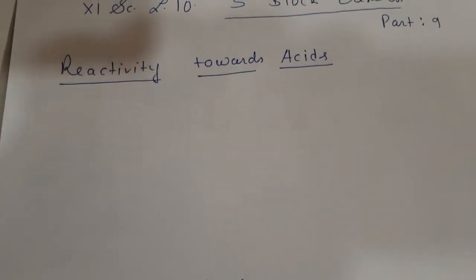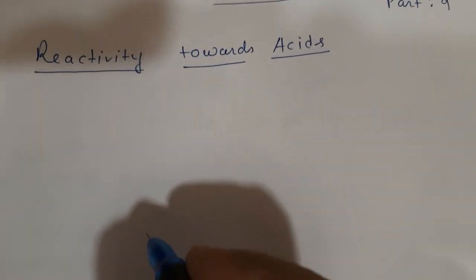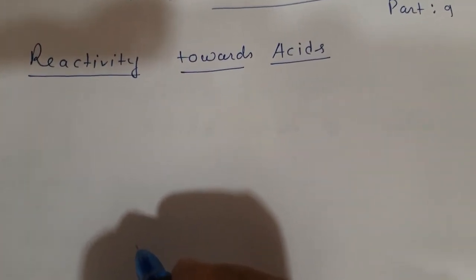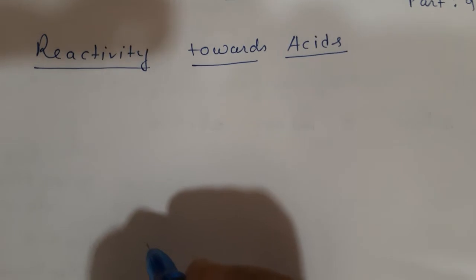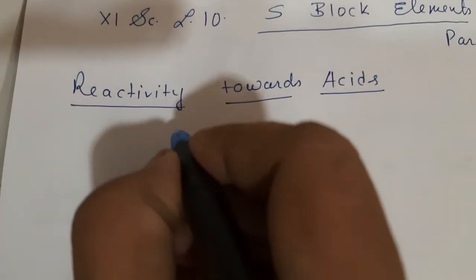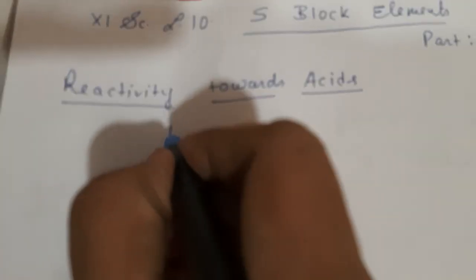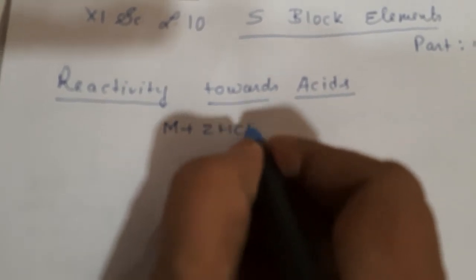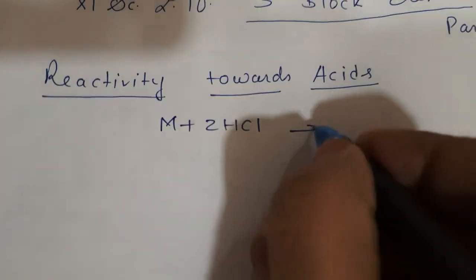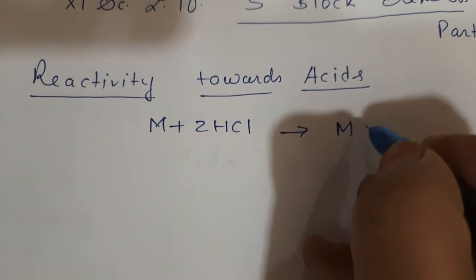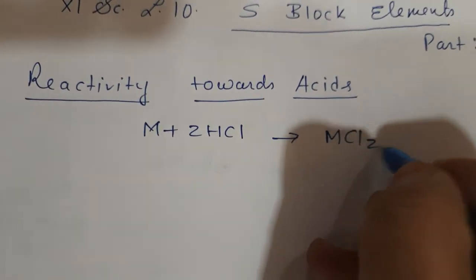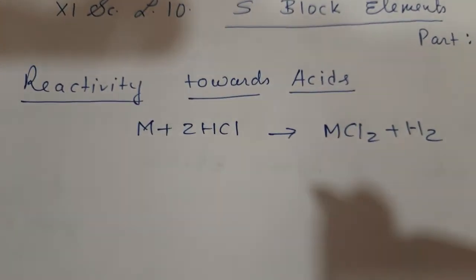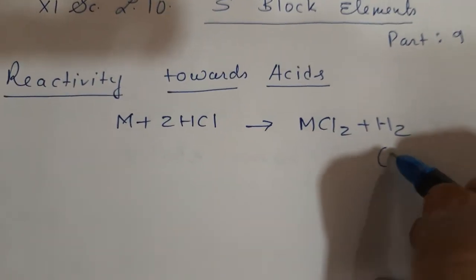So how do they react? They react like all the alkaline earth metals — they readily react with acids liberating dihydrogen. The formula will be: M + 2HCl → MCl₂ + H₂, where M is the group 2 element.